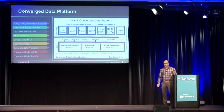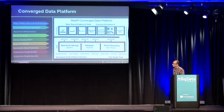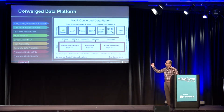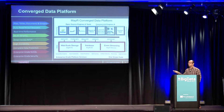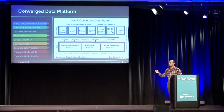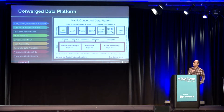On high availability — MAPR does not have a name node concept. As you know, the name node is a single point of failure in Apache Hadoop. In MAPR, all metadata is distributed across all data nodes using a concept called containers. Because the metadata is replicated, even if one node goes down you get high availability of your data at all times.